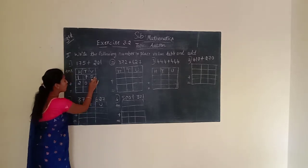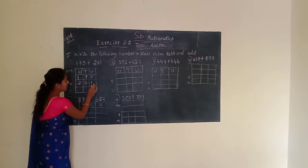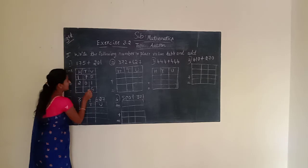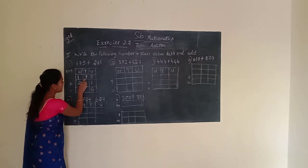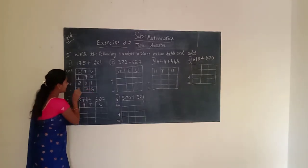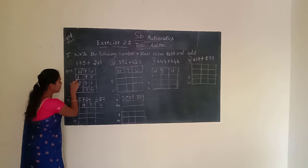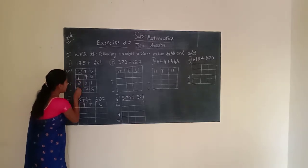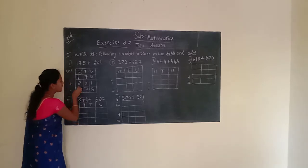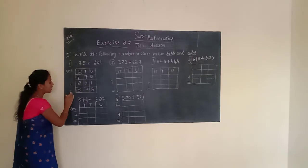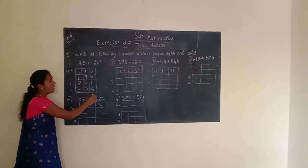Unit place is having 5 and 1. 5 plus 1 is 6. We have to write 6. Next, tens place. Tens place is 7 and 0. 7 plus 0 is 7. Next, hundreds place. Hundreds place is having 1 and 2. 1 plus 2 is 3. We have to write 3. Given number is 175 plus 201 equals 376.